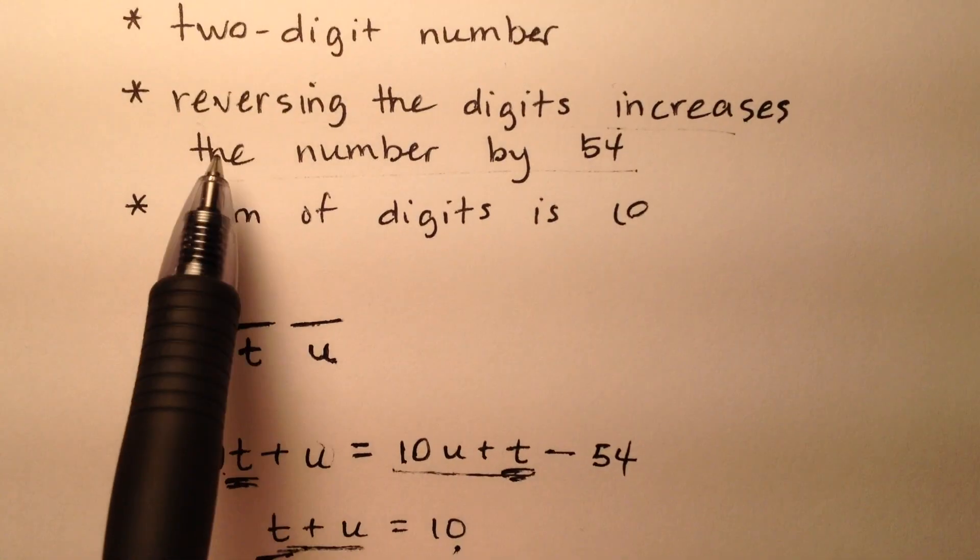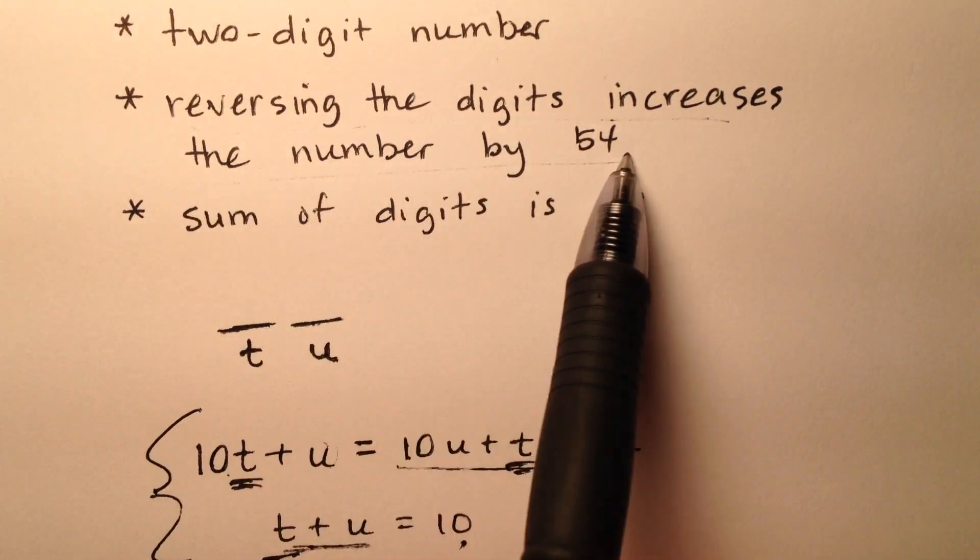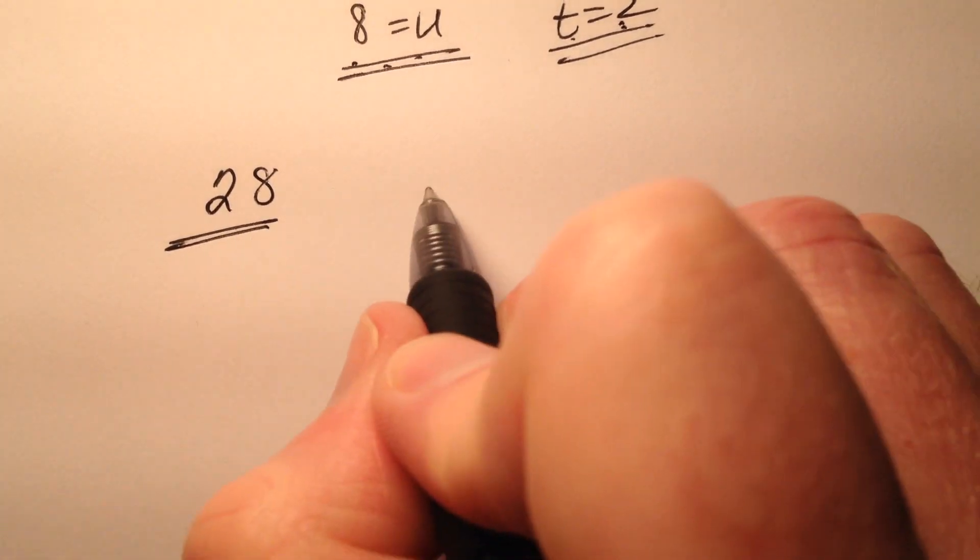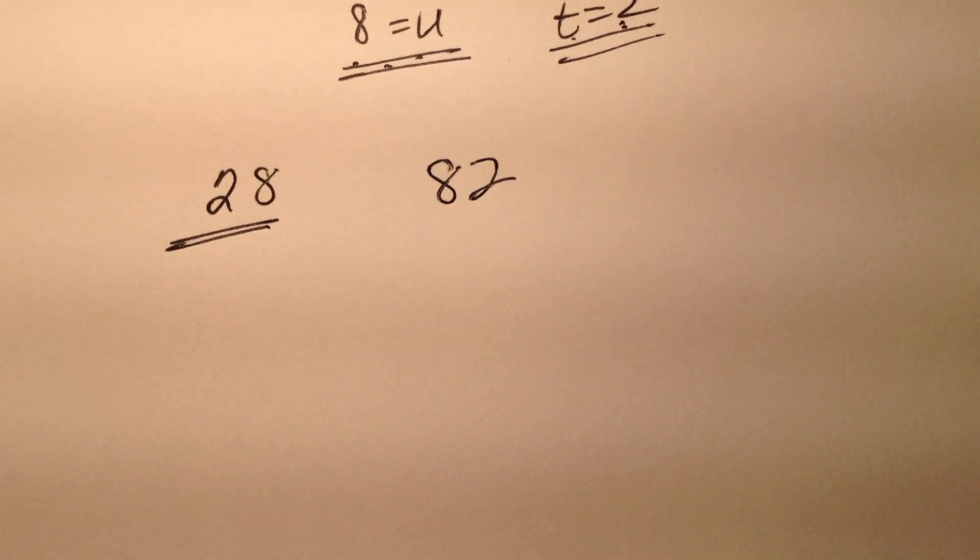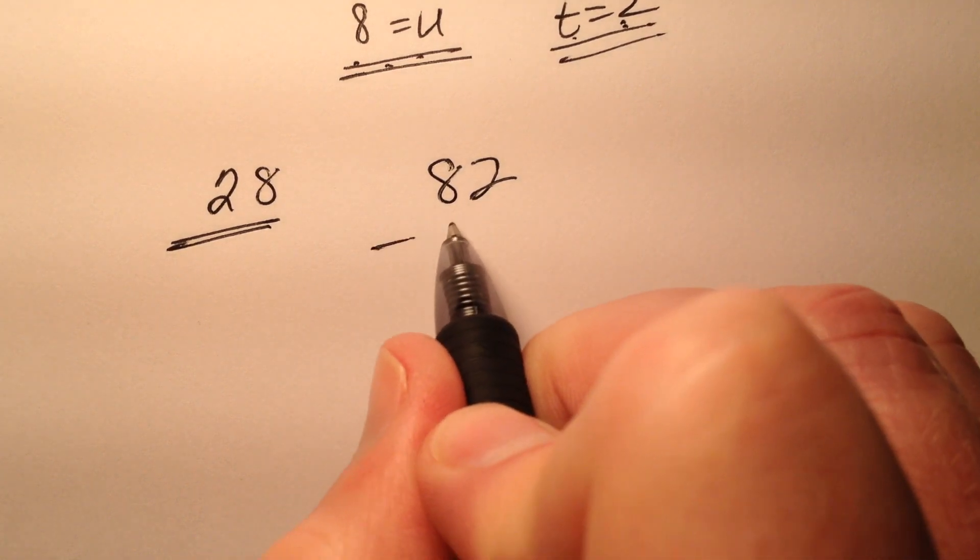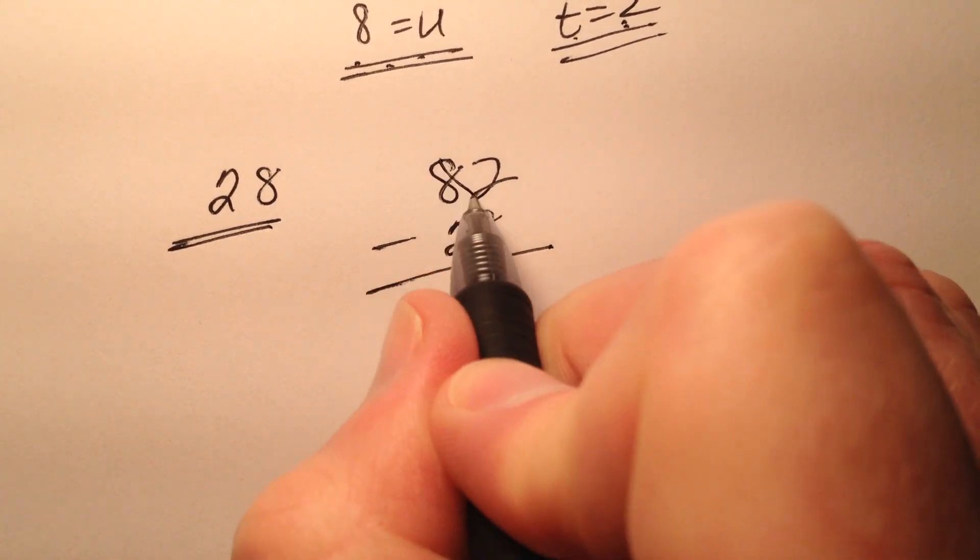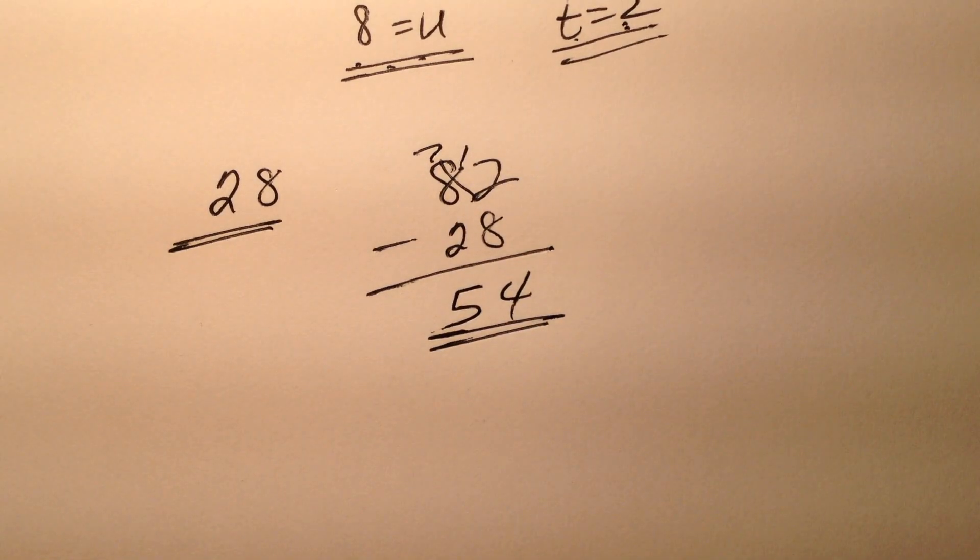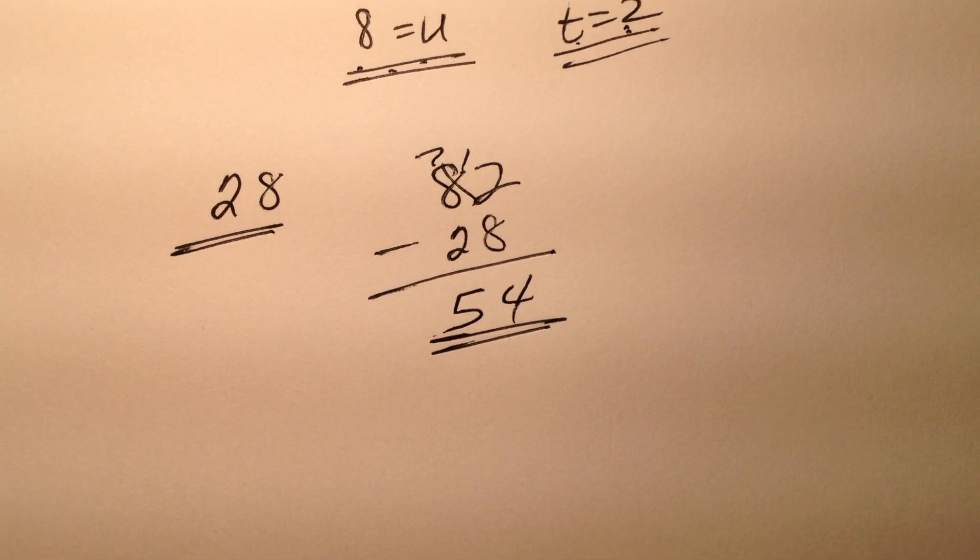I know that reversing the digits increases the number by 54. Let's reverse the digits—82 is my number now. If I subtract these two, I get 54. It did get increased by 54, so I know it's correct.